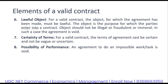The seventh element is certainty of terms. For a valid contract, the terms and conditions should be certain and should not be vague and uncertain. The terms should be easily understandable to both parties, to the point, and relevant. They should not involve anything which doesn't relate to the entire service. For example, on a parking ticket, terms and conditions are written at the back.